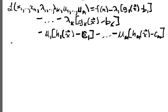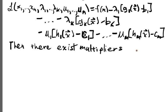But the guarantee is that there exists multipliers lambda 1 star up to lambda k star, mu 1 star up to mu m star, such that: